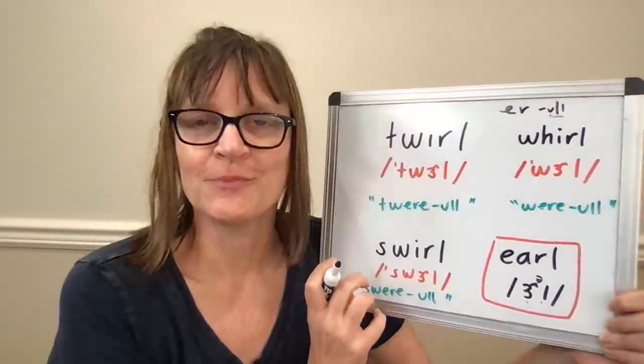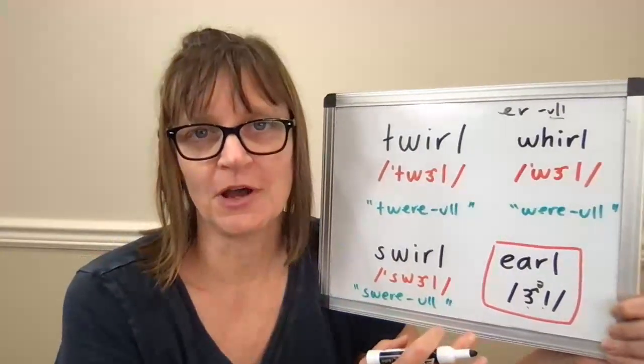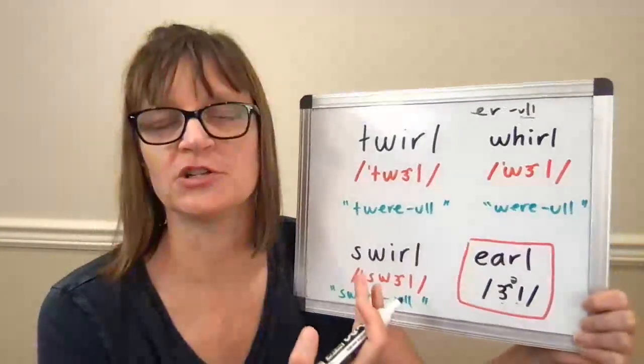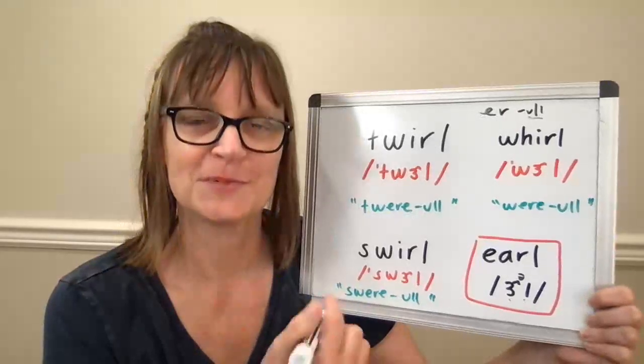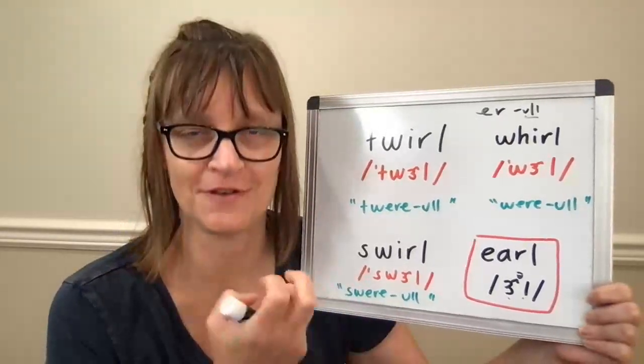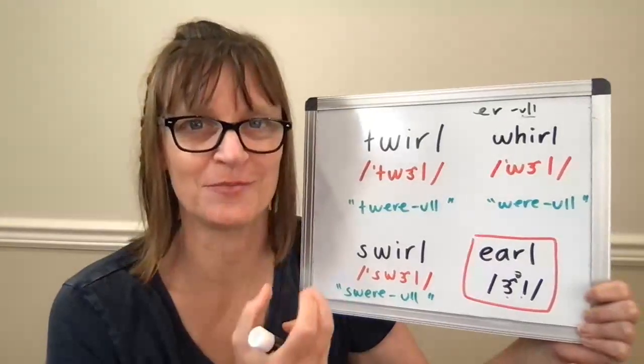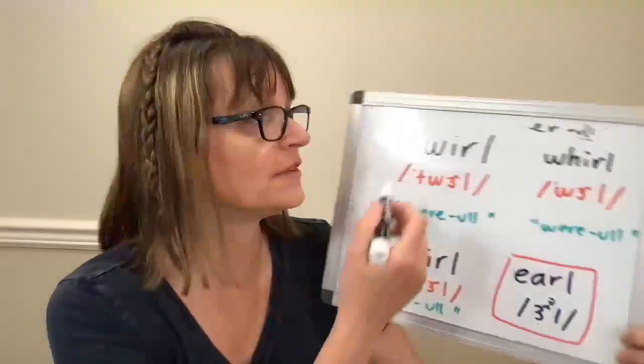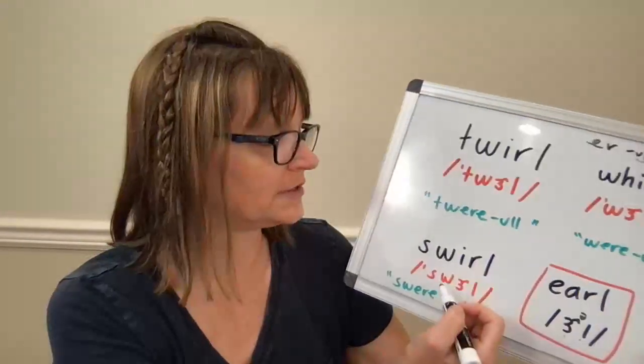Working on R and L separately is going to really help you when it comes to saying words like earl and twirl, because they're very challenging. I do have videos specifically for words like girl, squirrel, world. These are similar words, and you can get more details in those videos, but building from my earl is going to help me with these words: twirl, whirl, and swirl.